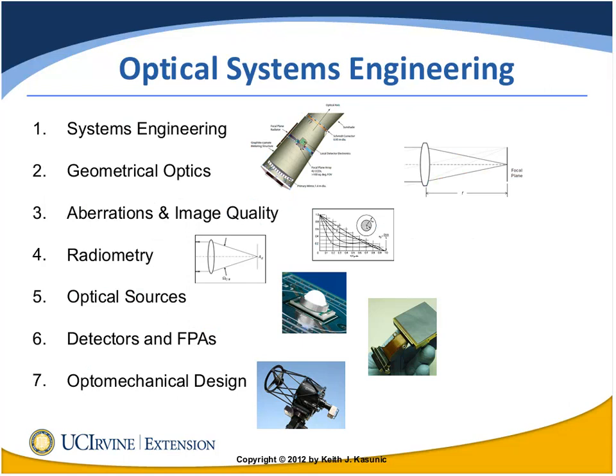The course content is broken down into seven sections. The first section reviews basic concepts of systems engineering and tools that system engineers typically use. The core optical engineering content covers geometrical optics, aberrations, and image quality — which students are assumed to have some background in — with one week reviewing each. The course then covers radiometry for a couple of weeks, two weeks on optical sources, three weeks on detectors and focal plane arrays, and closes with a week on optomechanical design.